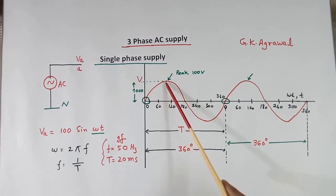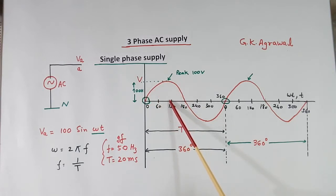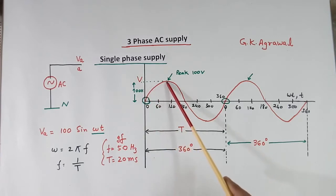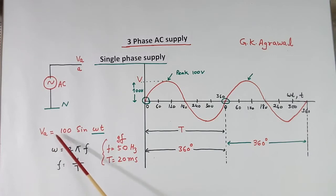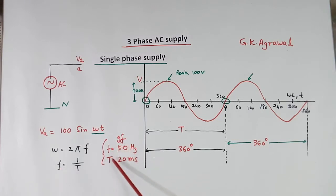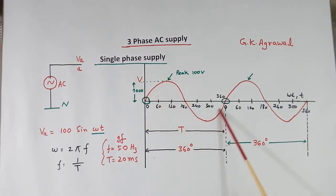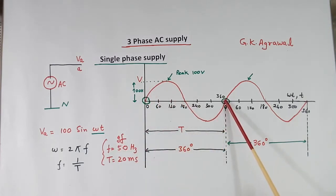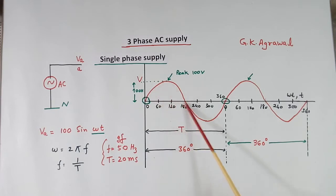Suppose the peak voltage of this sine wave is 100 volts — taken just as an example. Then the equation will be V = 100 sin(ωt), where omega is 2πf and f is frequency. For example, if f is 50 Hz, the time period T will be 20 ms. This is 1 cycle. 50 Hz means in 1 second there will be 50 such cycles. The time taken for 1 cycle is called T, which is 20 ms here.